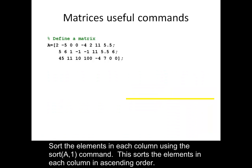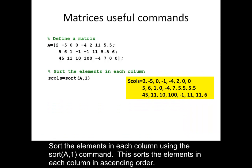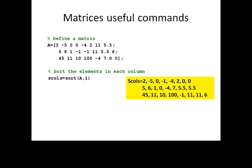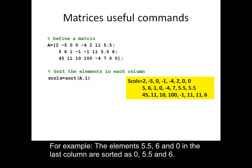Sort the elements in each column using the sort(A,1) command. This sorts the elements in each column in ascending order. For example, the elements 5.5, 6, and 0 in the last column are sorted as 0, 5.5, and 6.